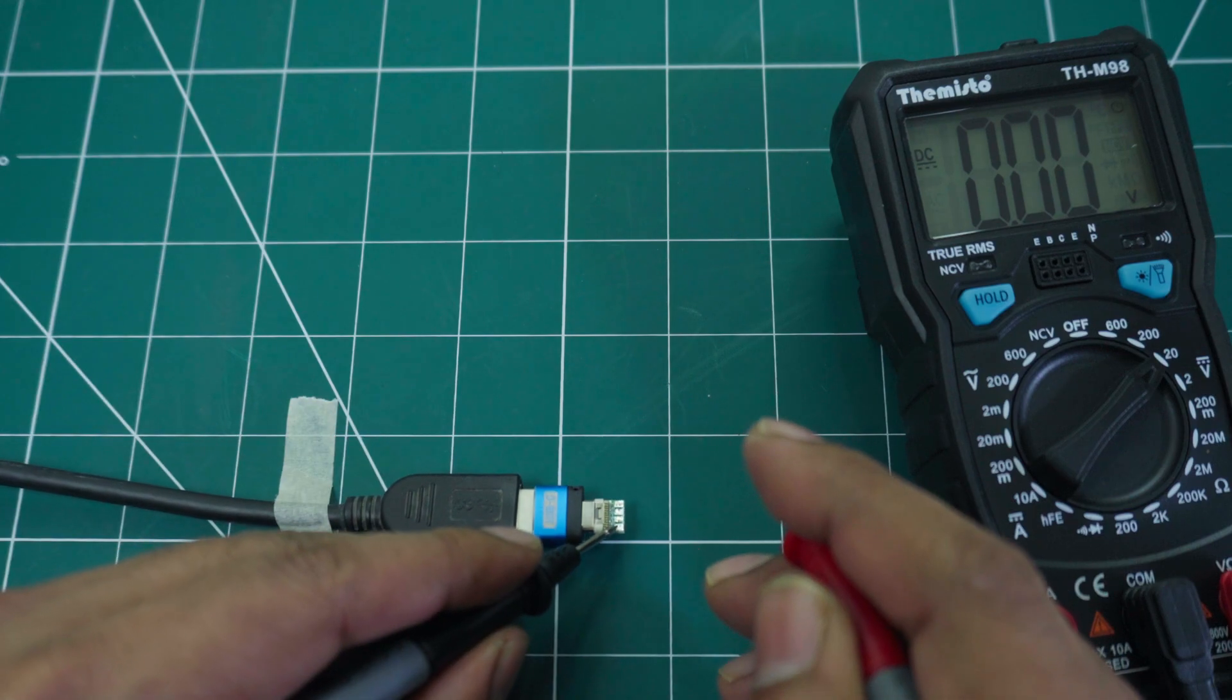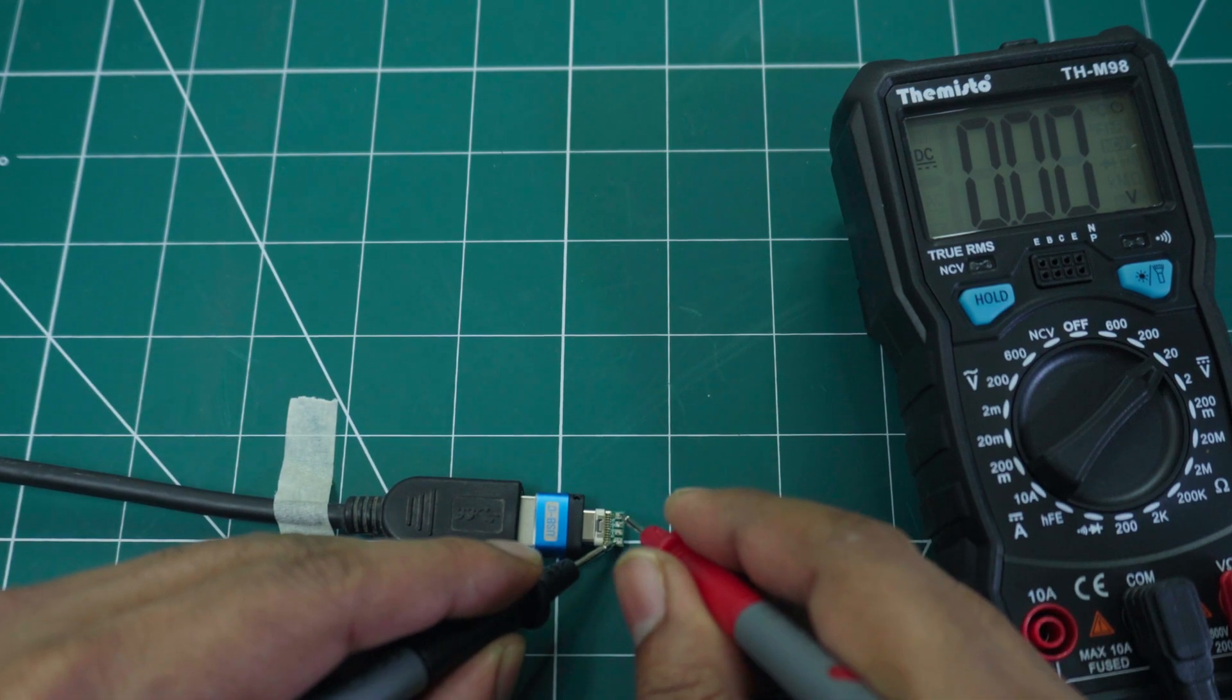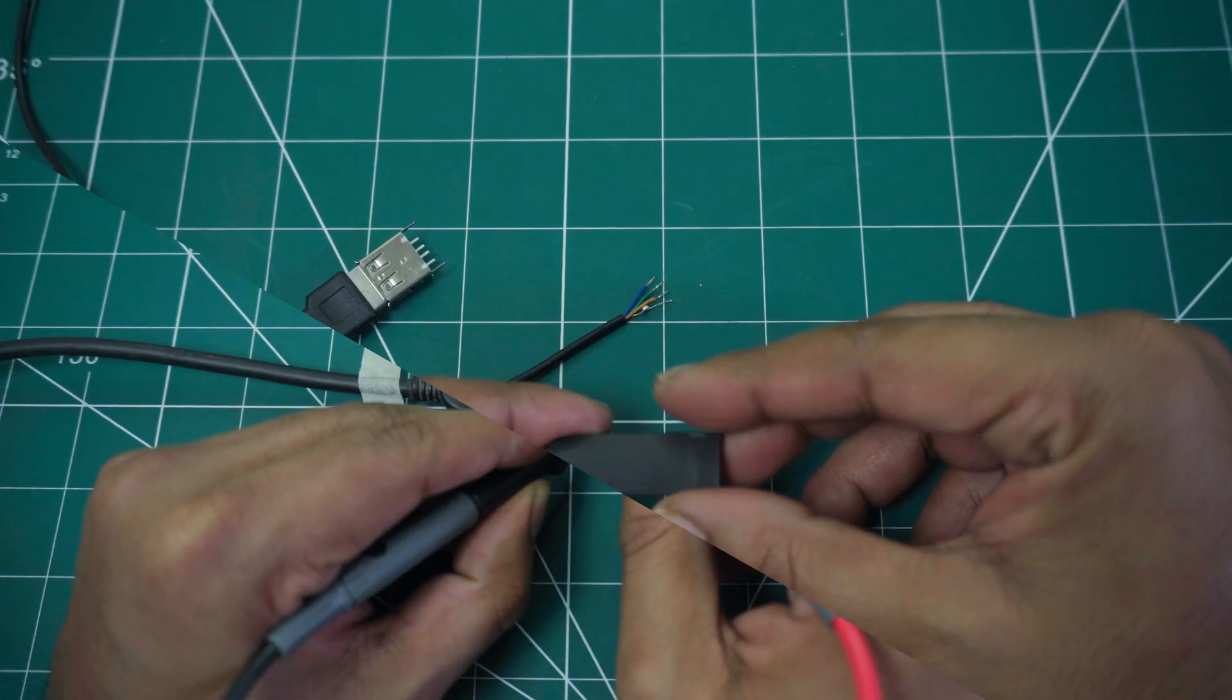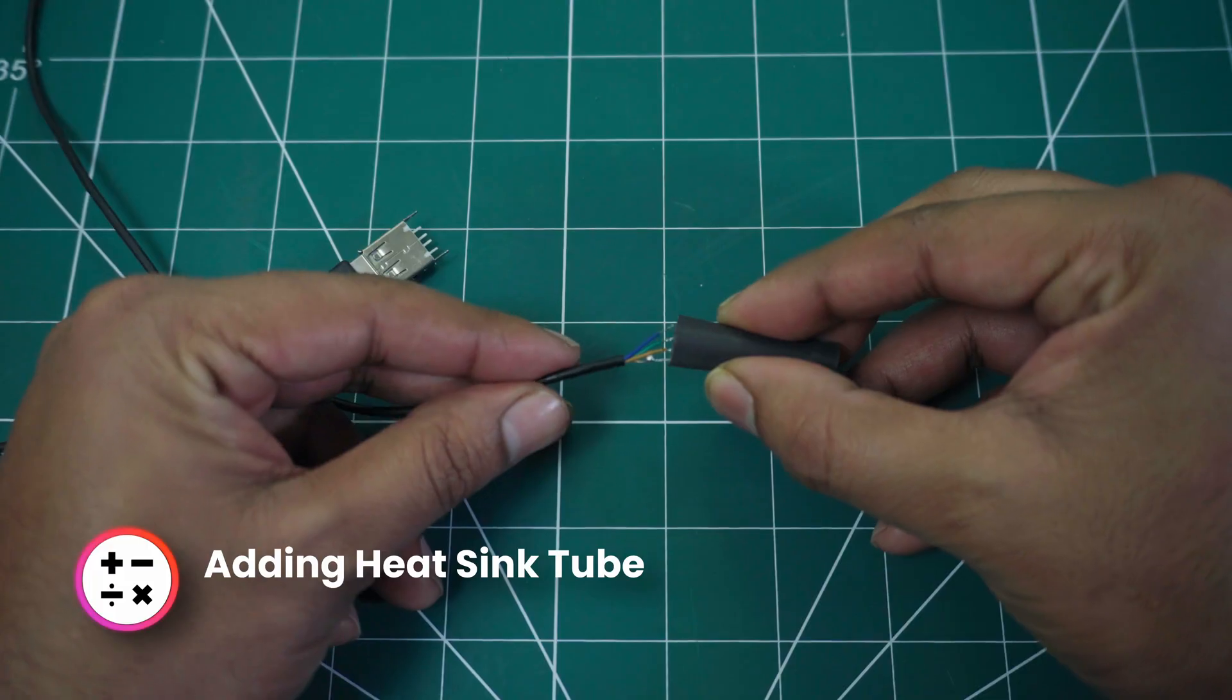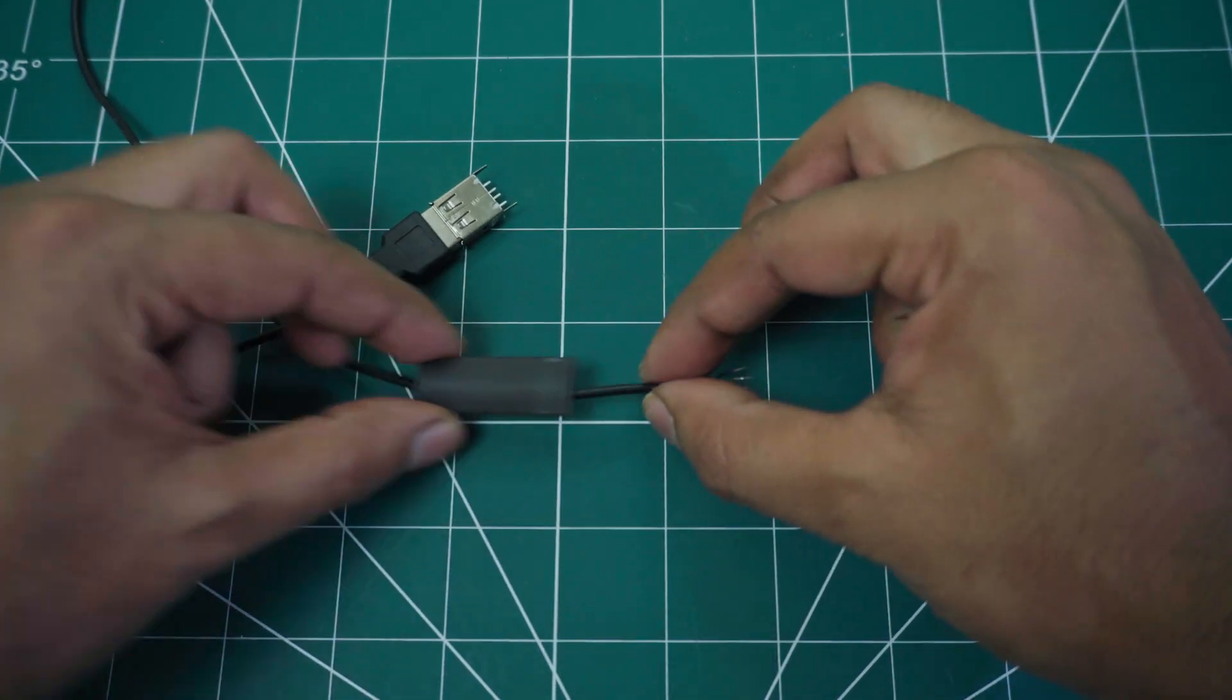Connect the USB-C socket to a power source and verify the polarity. Slide the heat sink tube onto the cable. I am adding two heat sinks to give the cable extra strength and protection.